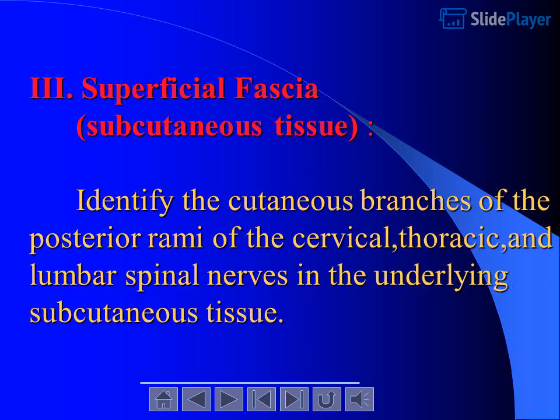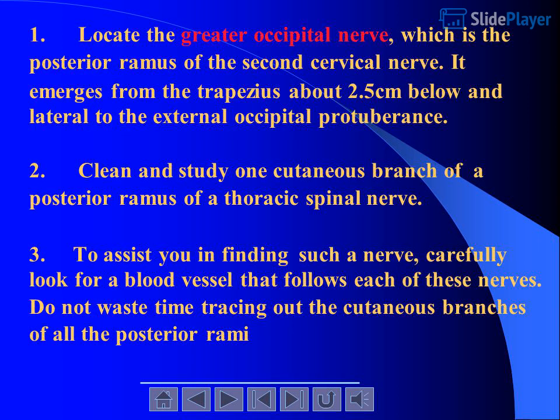Superficial fascia, subcutaneous tissue. Identify the cutaneous branches of the posterior rami of the cervical, thoracic, and lumbar spinal nerves in the underlying subcutaneous tissue. 1. Locate the greater occipital nerve, which is the posterior ramus of the second cervical nerve. It emerges from the trapezius about 2.5 cm below and lateral to the external occipital protuberance. 2. Clean and study one cutaneous branch of a posterior ramus of a thoracic spinal nerve. 3. To assist you in finding such a nerve, carefully look for a blood vessel that follows each of these nerves.